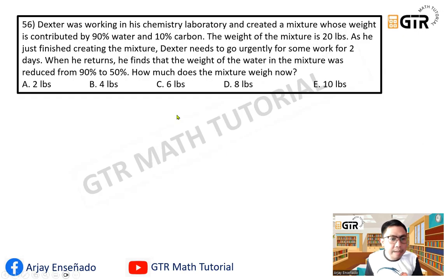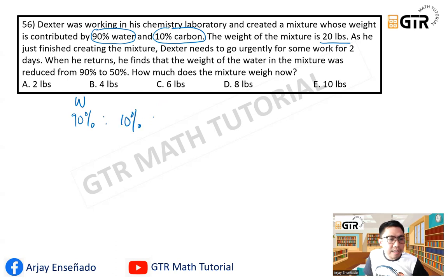Okay, so let's start. This is a mixture problem, but instead of combining, what happened is the water was reduced. So in the beginning, we have 90% water and then 10% carbon. The weight of the mixture is 20 pounds, so let's get the ratio: 90% water and then 10% carbon.